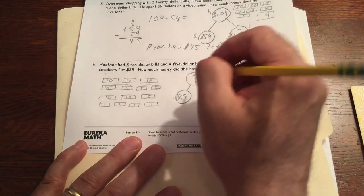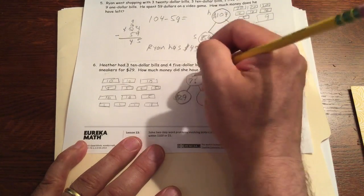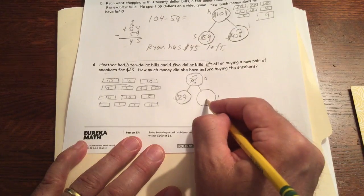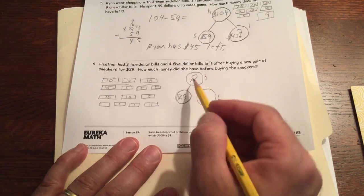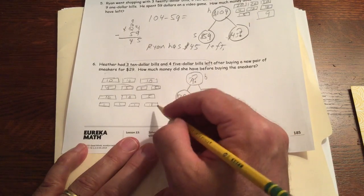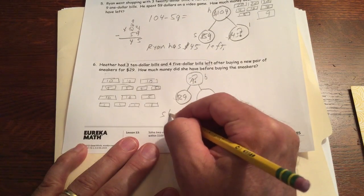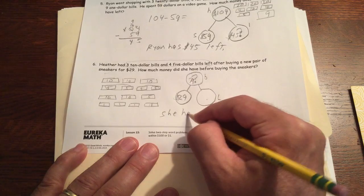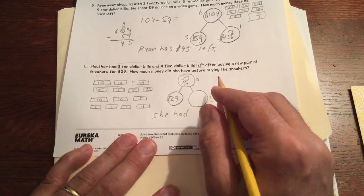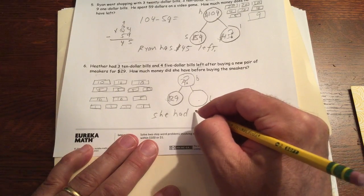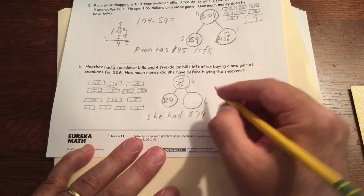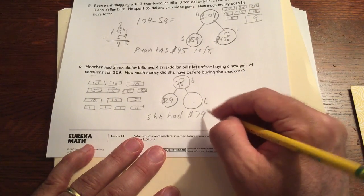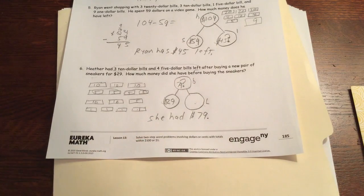$79. That way we don't even have to figure out how much this stuff was that she had left. We don't have to. We just counted our answer. So she had $79.